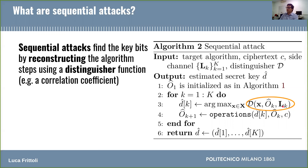The distinguisher — which, for example, might be a correlation coefficient — has higher values when the key candidate x is correct and lower values otherwise. So the reconstructed key bit value, which we indicate by d-hat of k, is selected as the candidate maximizing the distinguisher.